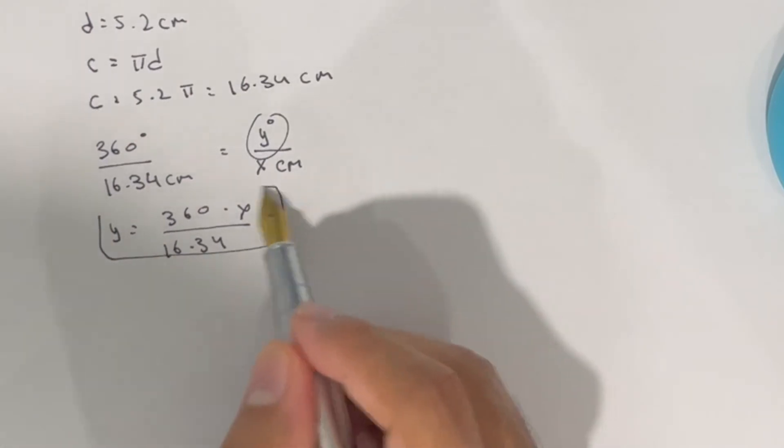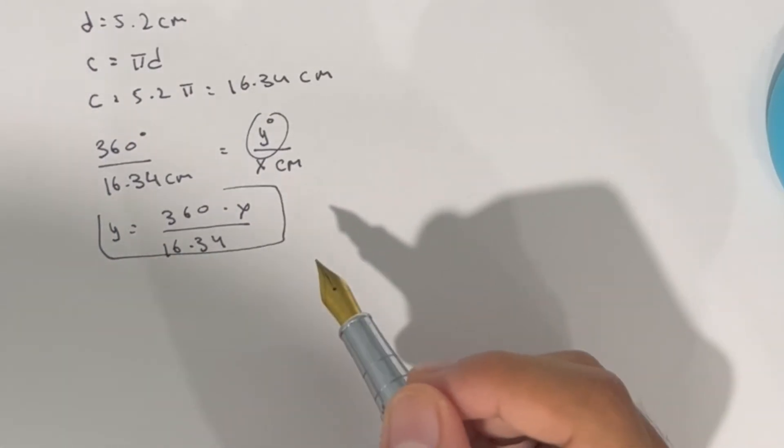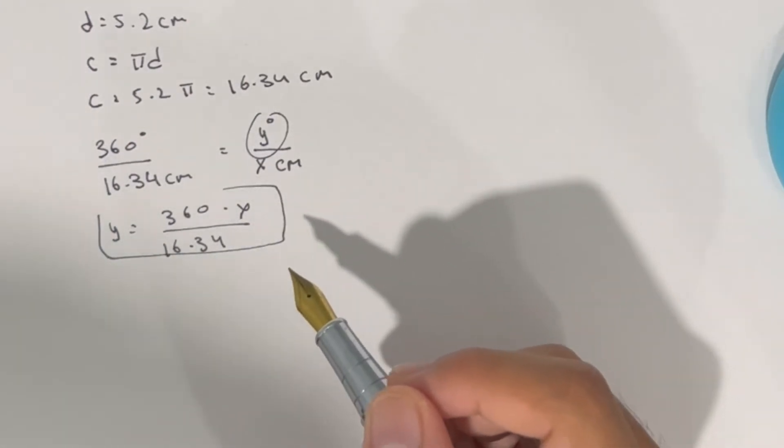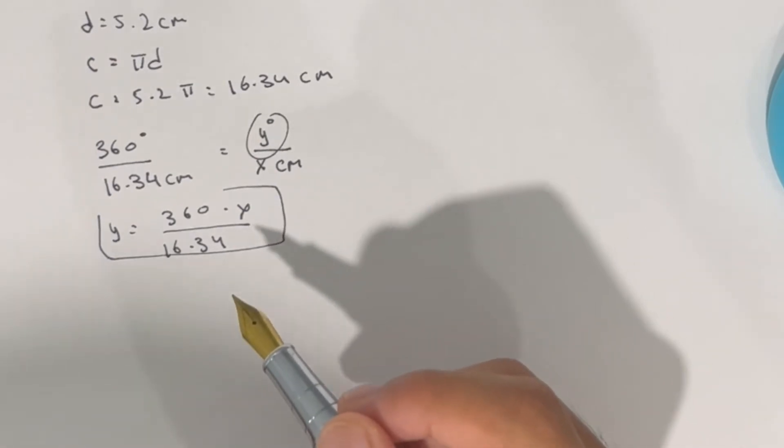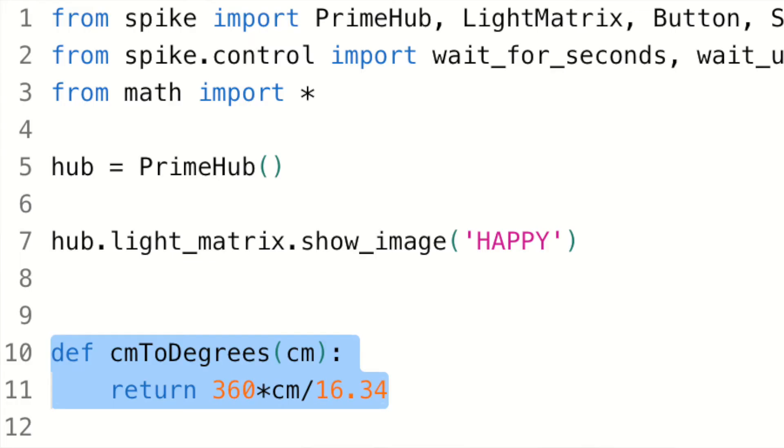So this formula here can be entered into whatever programming tool you're using in order to give you the desired output in degrees. I've shown two implementations here with the spike python and spike block programming interfaces, but it can be adapted for whatever interface you're using.